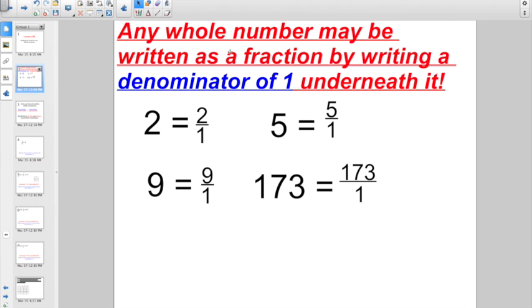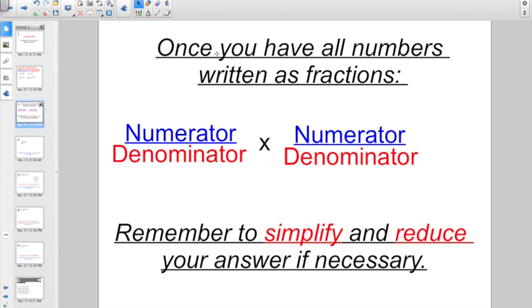Any whole number may be written as a fraction just by writing a denominator of 1 underneath it. If you wanted to write 2 as a fraction, it would be 2 over 1. 5 as a fraction, 5 over 1. 9 as a fraction, 9 over 1. 173, it would still be 173 with a denominator of 1. So all you have to do is make sure you have all your numbers written as fractions. The rest is all review. You go numerator times numerator, denominator times denominator, but remember, you might have to simplify and reduce your answers if necessary.